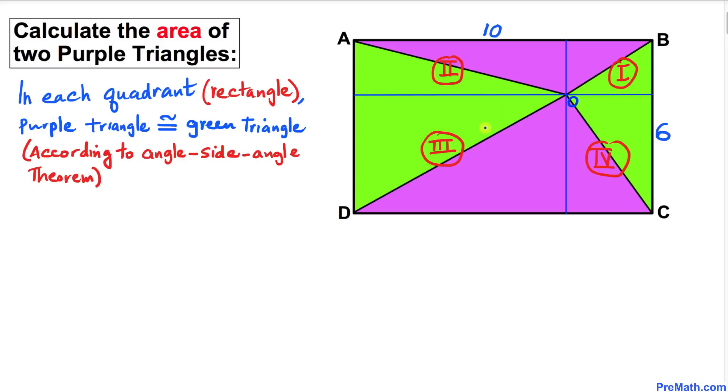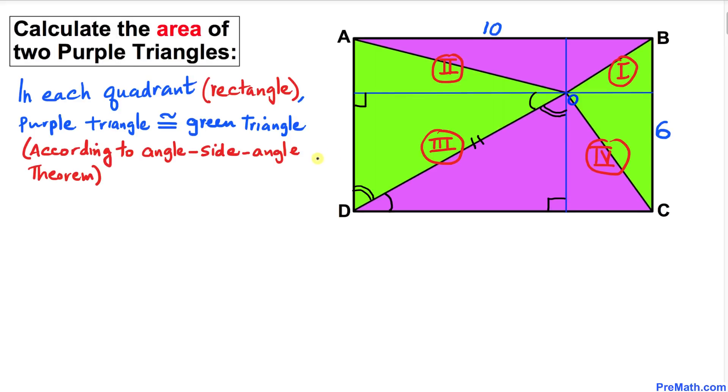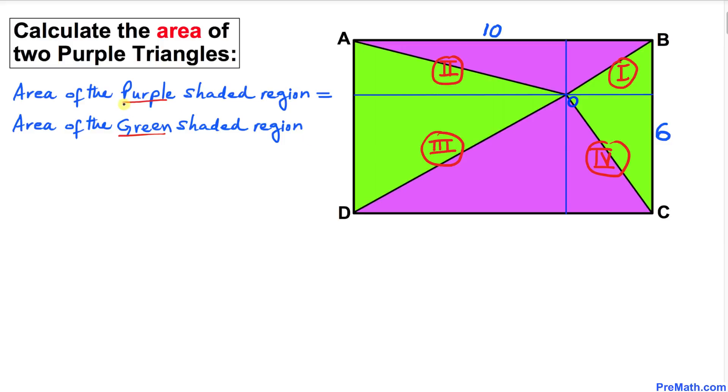We can see that these green and purple triangles share this common side. This angle is 90 degrees and this angle is 90 degrees as well. This angle is the same as this angle because they are alternate angles. Thus we conclude that the area of the purple shaded region is equal to the area of the green shaded region.